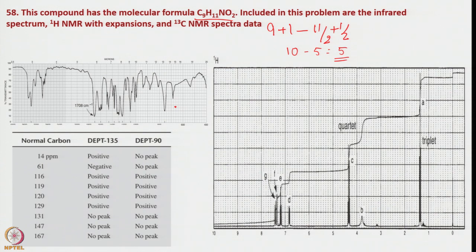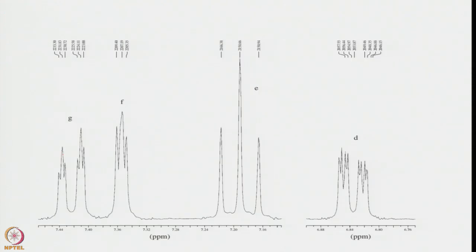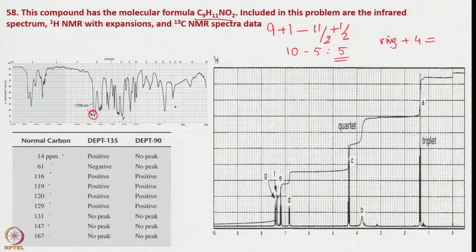With an HDI of 5, there will be a ring plus 4 degrees of unsaturation. The IR shows a carbonyl group (COO), and there are bands around 1200 cm⁻¹. In the 1H NMR, there are 9 signals — all different — with further splitting shown for certain signals in the aromatic region. There is also a quartet, a triplet, and a small broad peak that may represent OH or NH2.